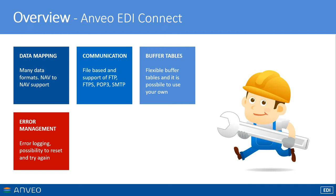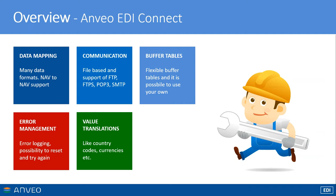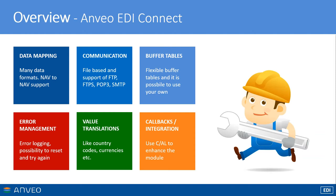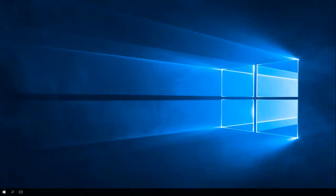We have an error management component with extensive error logging where you can debug data mappings. We provide a component for translating values received in an external format to NAV data, like country codes or currencies. It is also possible to react to events of the EDI module by writing your own code — for example, executing certain functionality after converting a mapping. And it's easy to integrate our module into NAV, as we are a completely separated add-on that doesn't touch any standard objects.